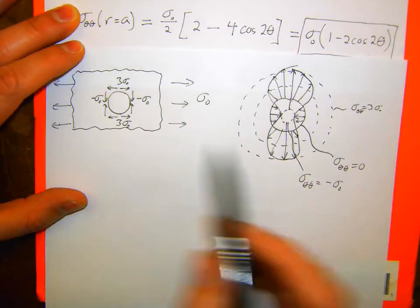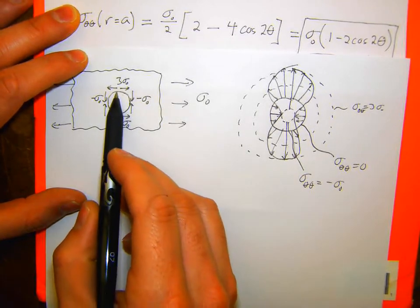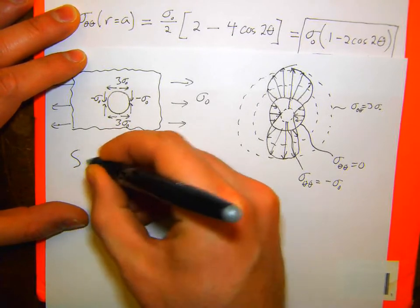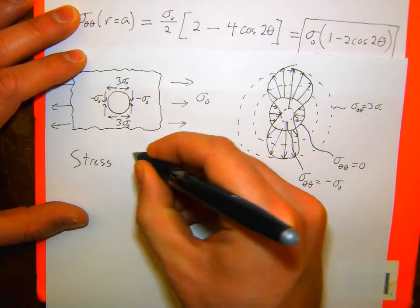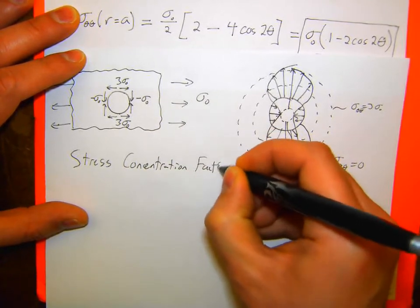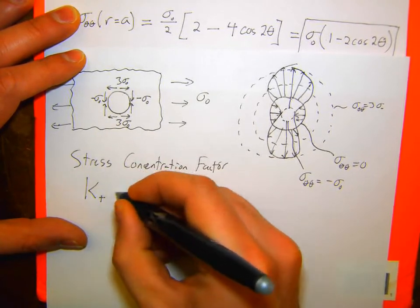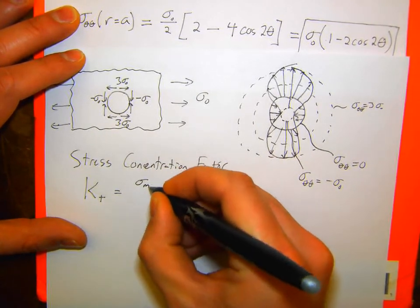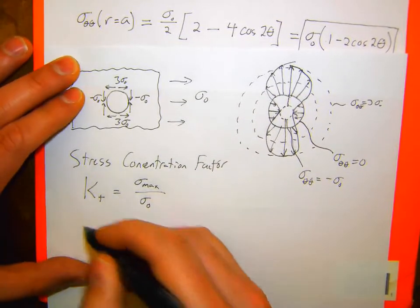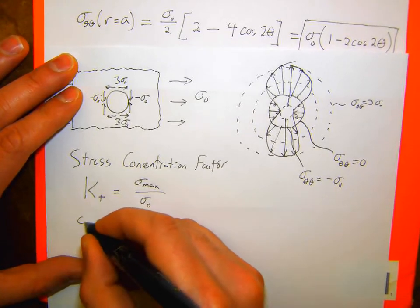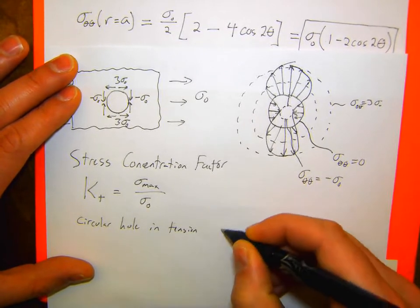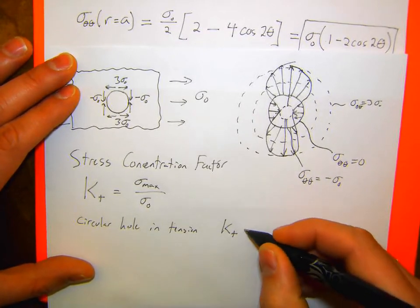Now I'll define the stress concentration factor K_T, which is the maximum stress over the far field applied stress. For a circular hole in tension, K_T equals 3.